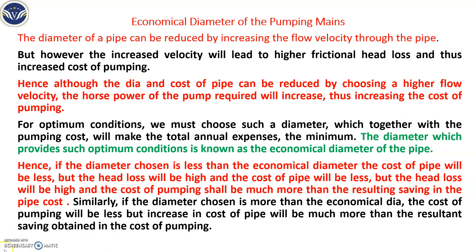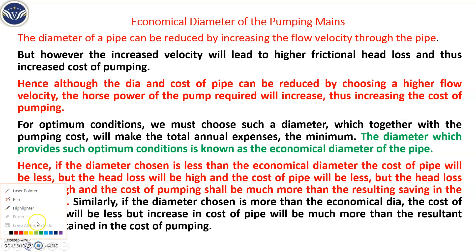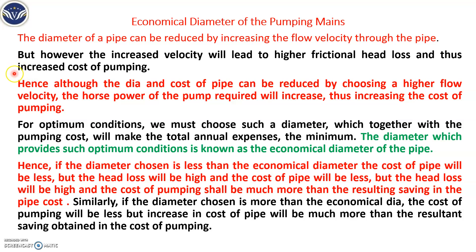So what happens when you reduce the diameter of that pipe? When you reduce the diameter, there is an increase in the flow velocity. When there is an increase in flow velocity, it increases the cost of pumping. Although the cost of the pipe is reduced by choosing a high velocity, it increases the horsepower requirement, and thus it increases the cost of pumping.